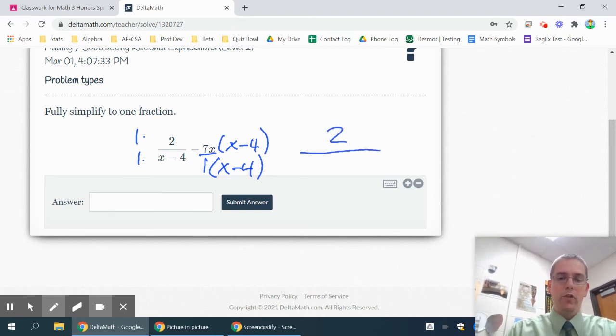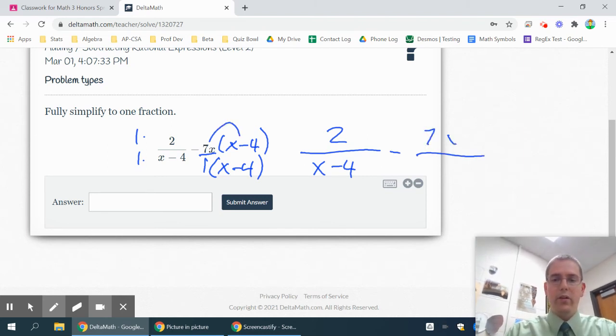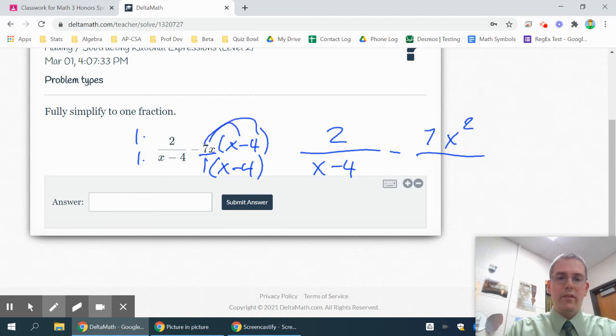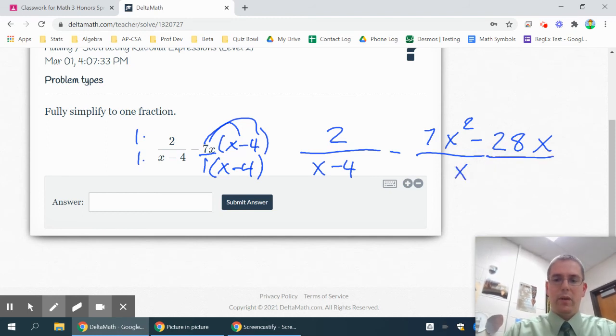So now my numerators are a 2 for my first fraction. And then my second fraction becomes a 7x times x is 7x squared, and then 7x times minus 4 is minus 28x. And all of that is over x minus 4.